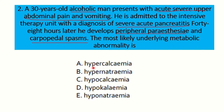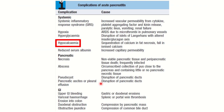The options given are: hypercalcemia, hypernatremia, hypocalcemia, hypokalemia, and hyponatremia. We have to be very careful to identify which ion is responsible for peripheral paresthesia and carpopedal spasm.